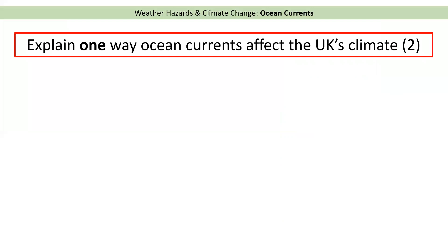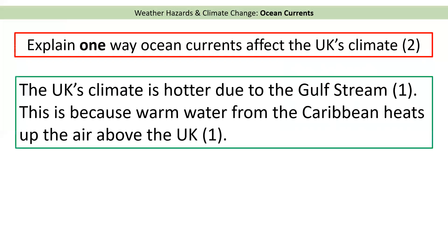Right, on to an exam question — quite an easy one. Explain one way ocean currents affect the UK's climate. It's worth two marks so it should be point and explain. Pause the video, have a go at this in your head or write the answer down, and restart when you're done. Here would be a model answer: the UK's climate is hotter due to the Gulf Stream. This is because warm water from the Caribbean heats up the air above the UK. If you have any further questions, please speak to your geography teacher.